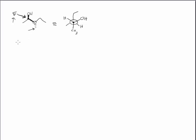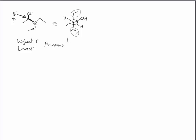We might be asked to draw the highest and lowest energy Newman projections. Remember that the lowest energy Newman projection has the largest group on each carbon farthest from each other. The front dot carbon has an H, an OH, and a methyl — so the largest group is the methyl. The back carbon has a methyl, ethyl, and H — the largest group is the ethyl. So we have the lowest energy conformer already drawn.